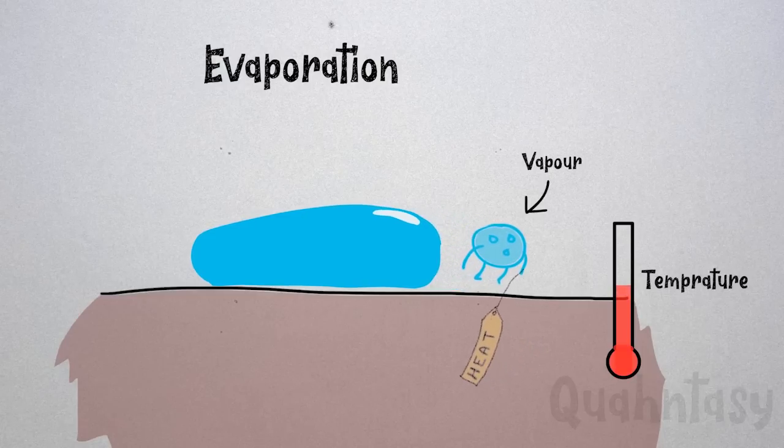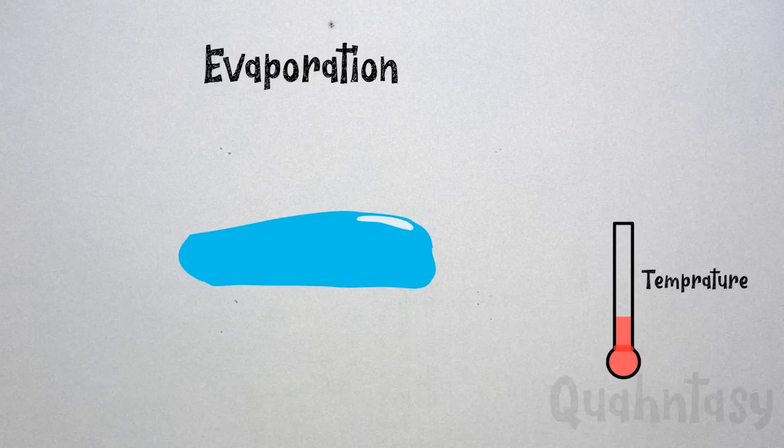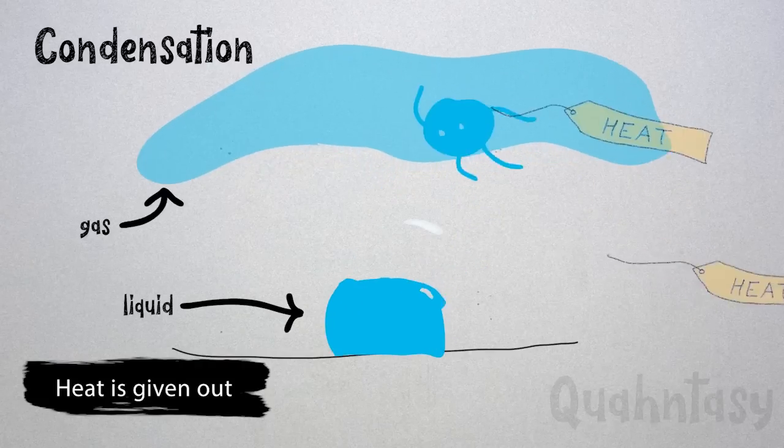On the other hand, in condensation, heat is given out for a phase change. So gas will give out heat to become liquid. In short, evaporation takes away heat and condensation gives out heat.